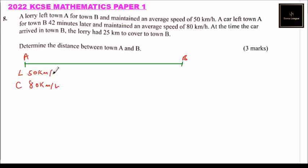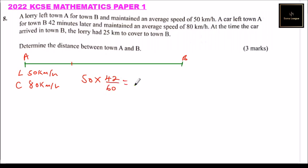The speed of the lorry is 50 kilometers per hour and the car is 80 kilometers per hour. The car started 42 minutes later, so we need to find the distance covered by the lorry after 42 minutes. We multiply the speed of the lorry, which is 50 kilometers per hour, by time which is 42 minutes and divide by 60 to convert to hours, and you find this is 35 kilometers.